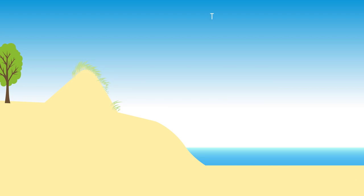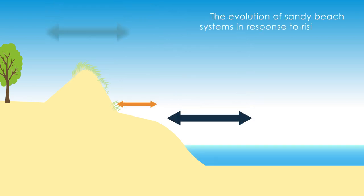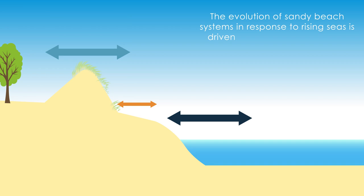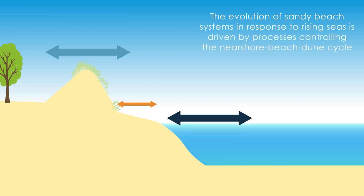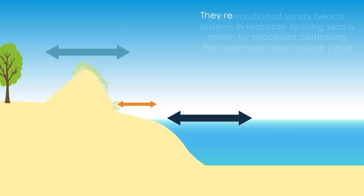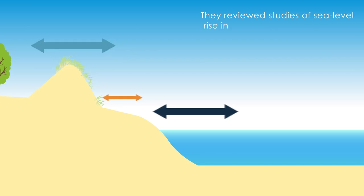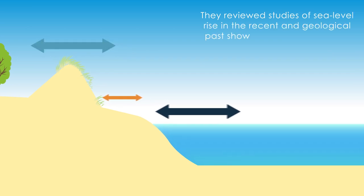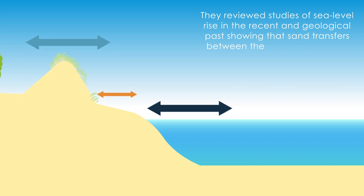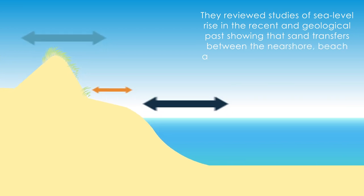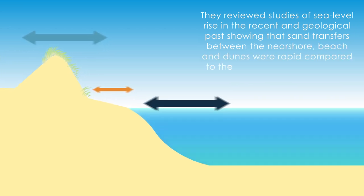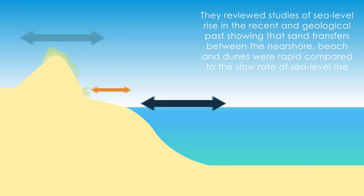The 2021 update took into account that the evolution of sandy beach systems in response to rising seas is driven by processes controlling the near-shore beach-dune cycle. They reviewed studies of sea level rise in the recent and geological past, showing that sand transfers between the near-shore, beach and dunes were rapid compared to the slow rate of sea level rise.